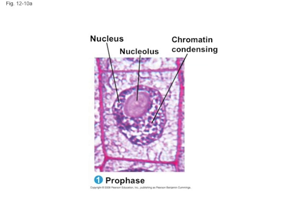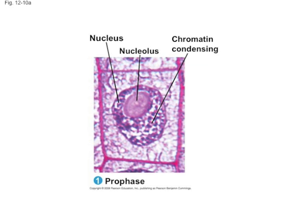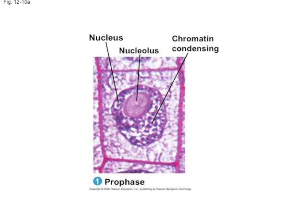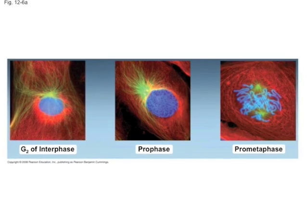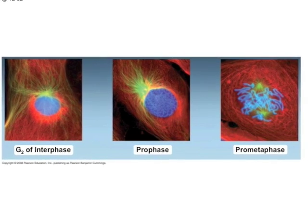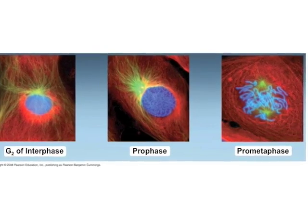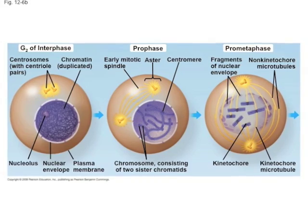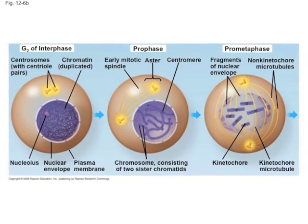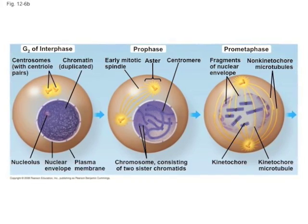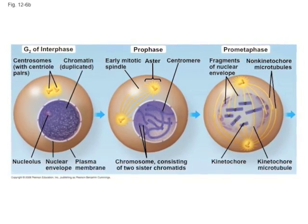In prophase, the chromatin condenses into chromosomes. The centrioles migrate to opposite poles, and the chromosomes move to the center of the cell, and the mitotic spindle starts to appear.